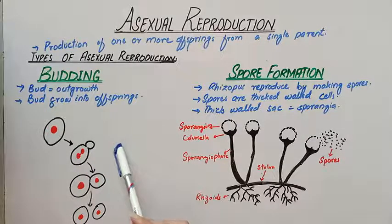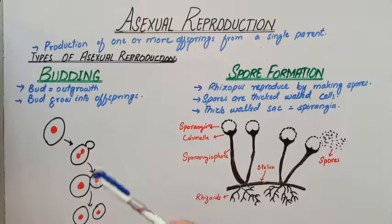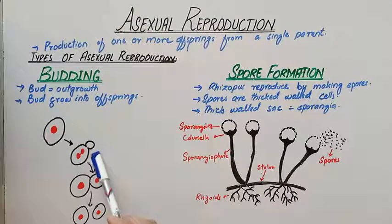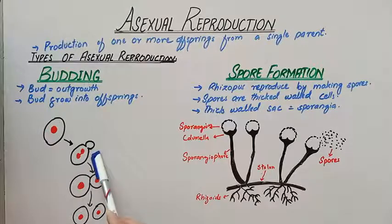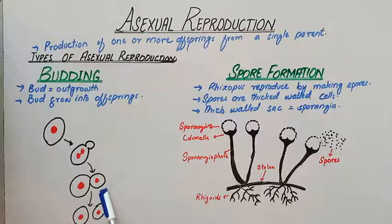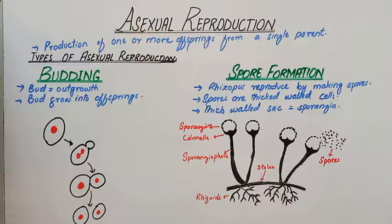We are taking the example of yeast, which is a unicellular fungus reproduced by budding. In yeast, a bud grows on the side of the cell. Then the nucleus divides into two, and one nucleus moves into the bud. The bud grows in size and may be separated from the parent or may remain attached to it.